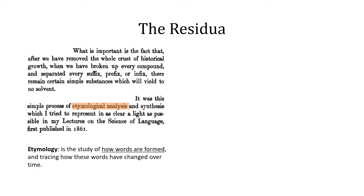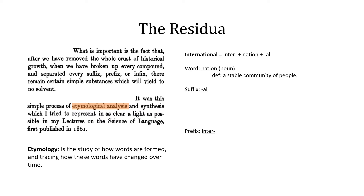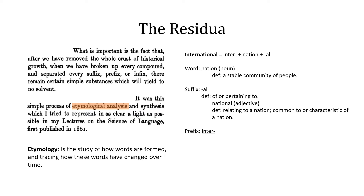The word I've chosen is international. The word international consists of three units: the word nation, the suffix -al, and the prefix inter-. Nation is a noun and refers to a stable community of people. The suffix -al adds the sense of 'or pertaining to,' thus turning nation into the adjective national — meaning relating to a nation, common to or characteristic of a nation. The prefix inter- adds the sense of between, amid, or among. When you combine inter- with national, we get the adjective international, meaning occurring or carried on between nations.